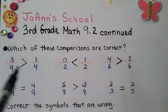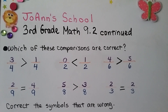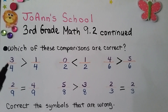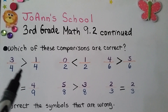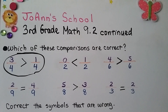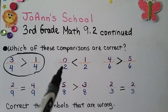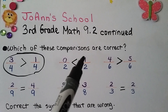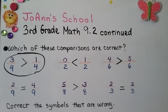We have 6 comparison problems — which of these are correct? The first has denominator 4 for both fractions and says 3 fourths is greater than 1 fourth. Same denominator, so we look at the numerators: 3 is greater than 1 — yes, that's true, so this one is correct. The next one has the same denominator 2 and says 0 halves is less than 1 half. Looking at the numerators: 0 is less than 1 — yes, that's true, so that's also a correct comparison.